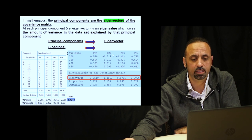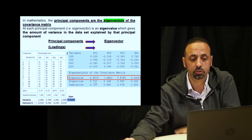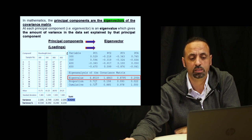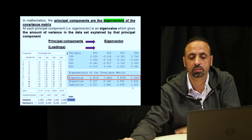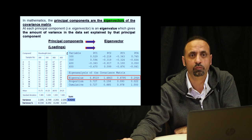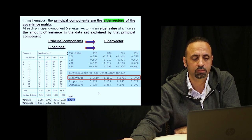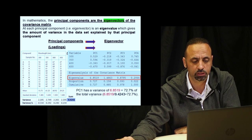Principal component 1 captured 6.85 out of the total 9.42 variation, and PC2 captures 1.4. As a percentage, PC1 captures about 72% of the variation, the second principal component captures about 15%, and the third captures about 9%, and so on. The cumulative summation of all eigenvalues equals 9.42 — 100% of the variation.